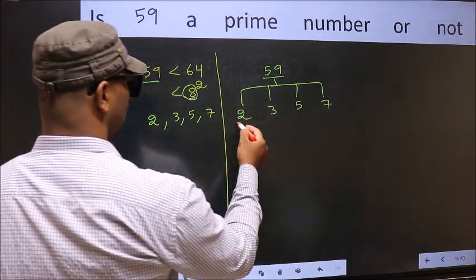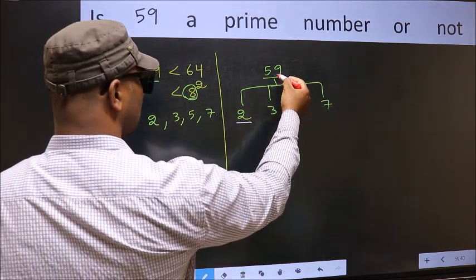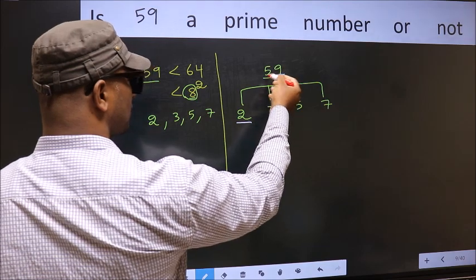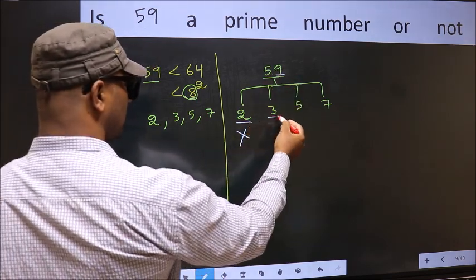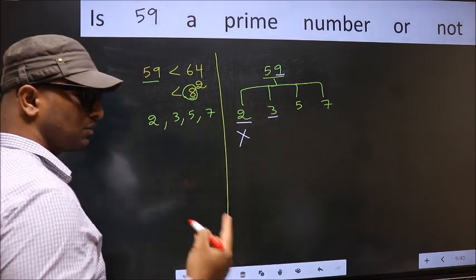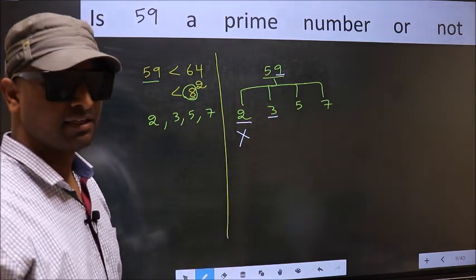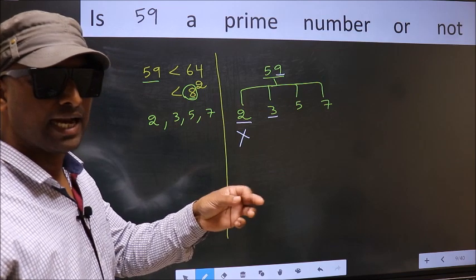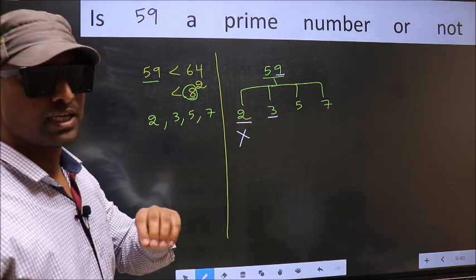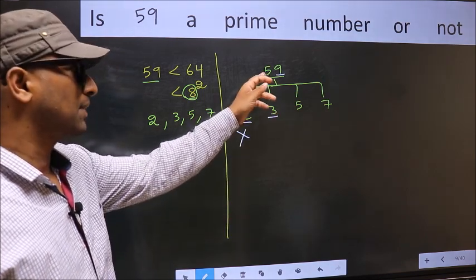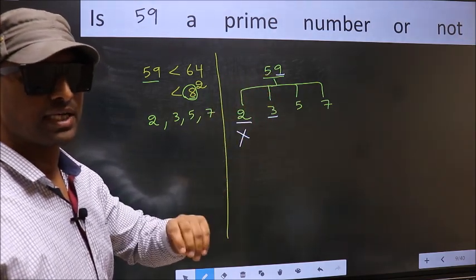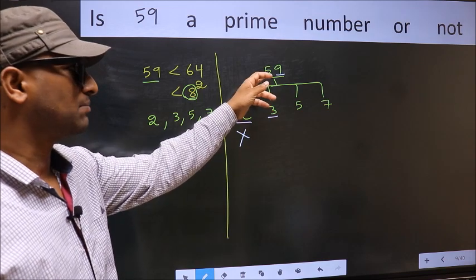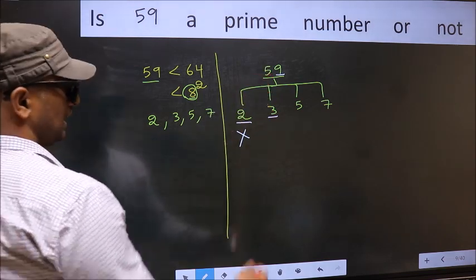Starting with 2. Last digit 9 not even. So, this is not divisible by 2. Next prime number 3. To check divisibility by 3, for that, we should add the digits. What I mean is 5 plus 9. We get 14 and 14 is not divisible by 3. So, this number also not divisible by 3.